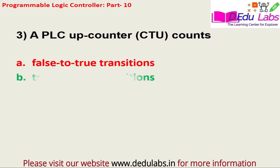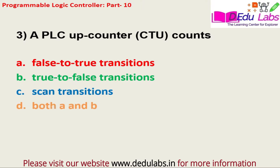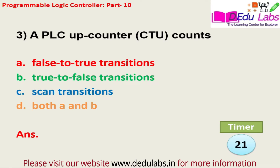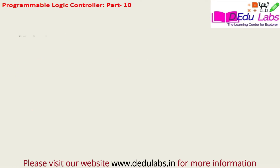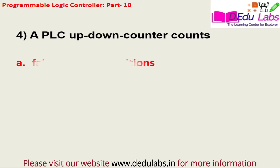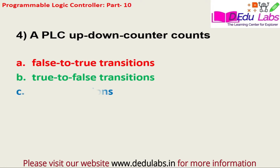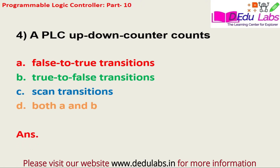Question number three: A PLC up counter CTV counts — option A, false to true transition; option B, true to false transition; option C, scan transition; option D, both A and B. The answer is option B, that is true to false transition.